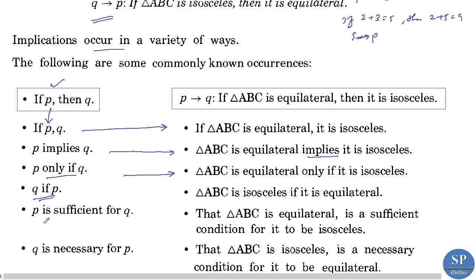Further, p implies q can also be expressed as: 'p is sufficient for q', meaning 'triangle ABC is equilateral is a sufficient condition for it to be isosceles'. Also, 'q is necessary for p', meaning 'triangle ABC is isosceles is a necessary condition for it to be equilateral'.